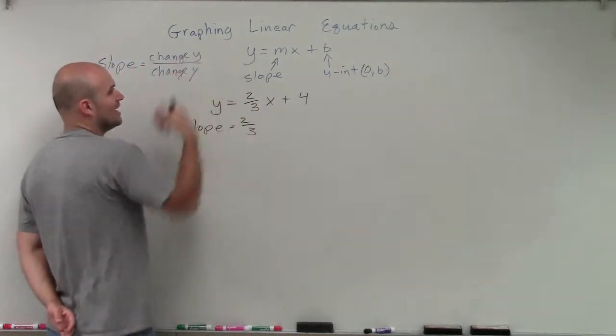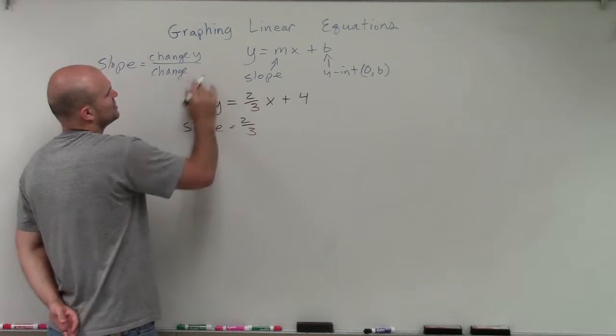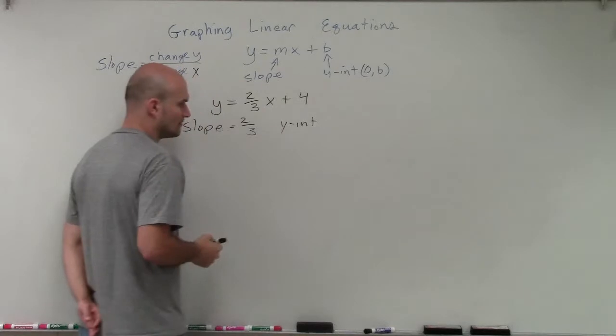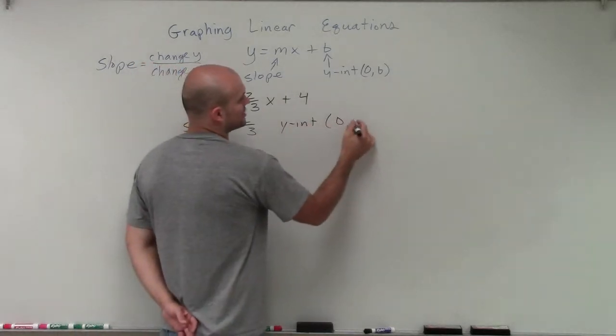We know that the change of y is 2. And I'm sorry, the change of y is 2, and the change in x is going to be 3. Then our y-intercept we're going to write as a coordinate point, which would be 0 comma 4.